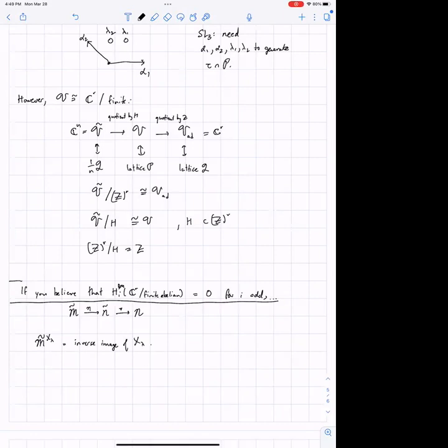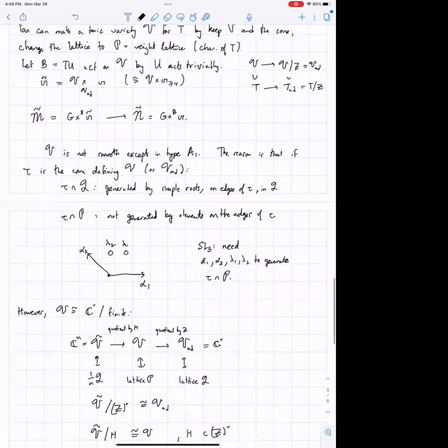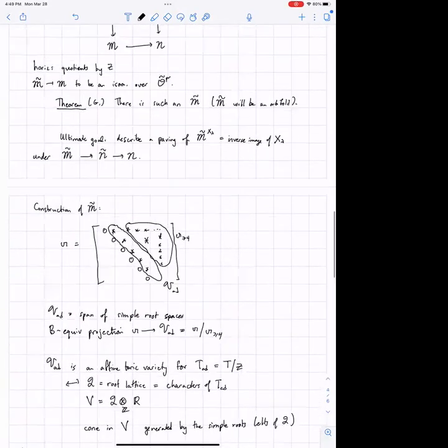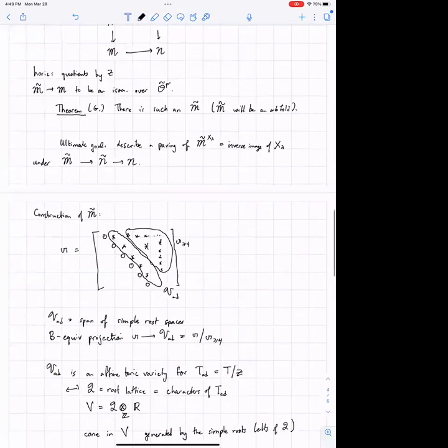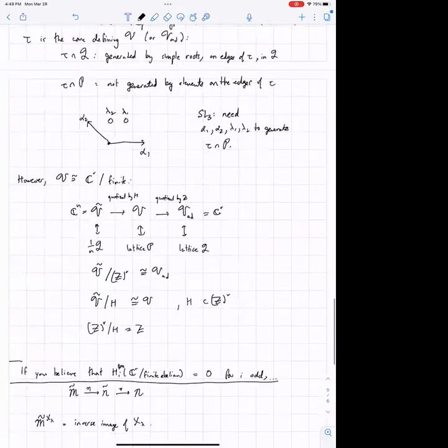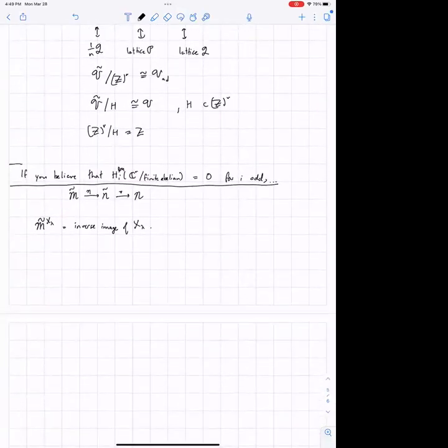So now, by the way, what I talked about before with this generalized Springer resolution is in all types, this is not just in type A, this actually works in all types. But some of what I'm doing now could be extended to other types too, I believe, but the combinatorics isn't worked out yet, so I'm going to just be in type A for the rest of this talk.